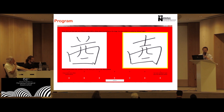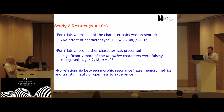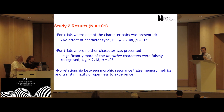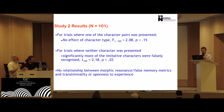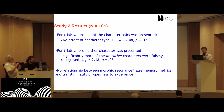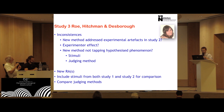The results did go away. We saw no headline morphic resonance effects — no preference for genuine characters over imitative characters. However, when neither of the characters had been presented, it was actually the imitative characters that participants showed a preference for. The individual difference covariates — transliminality and openness to experience — showed no relationship. So that leads us on to study three, which is ongoing.